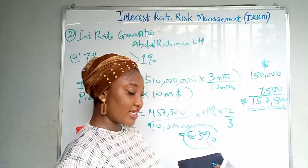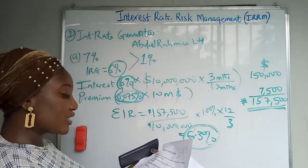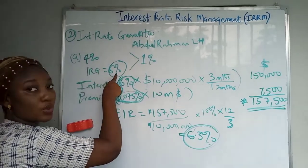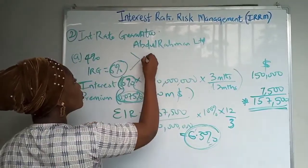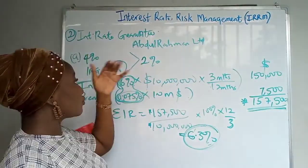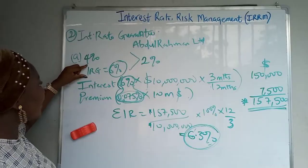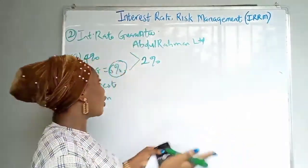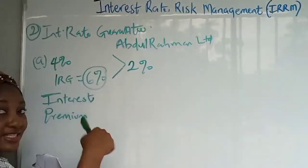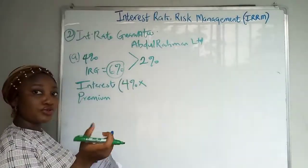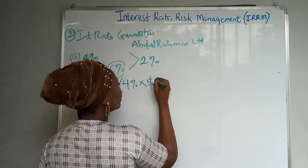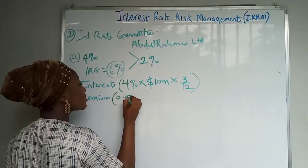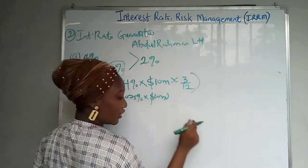For part B, if the market rate in three months is four percent per annum, the difference between four and six percent is two percent — and this is not favorable. The rational choice for Abdurrahman is not to exercise the option, because the guaranteed rate of six percent is higher than the available market rate of four percent. So he takes the lower four percent. That's four percent of ten million dollars prorated for three months, plus the premium of 0.075 percent of ten million dollars.